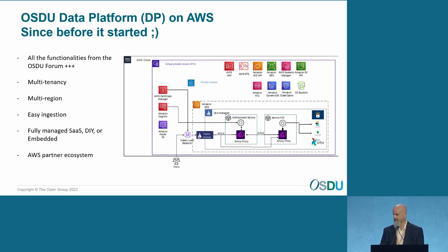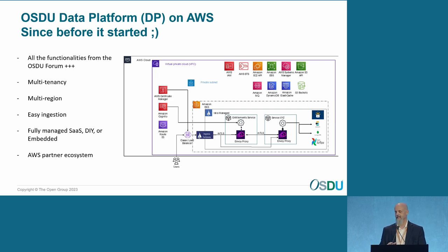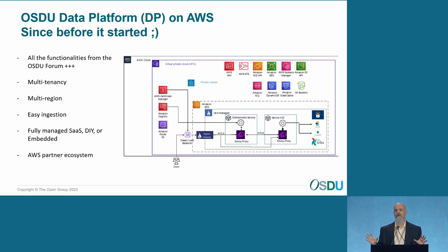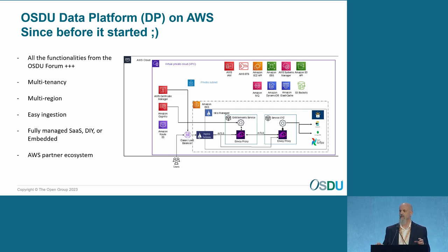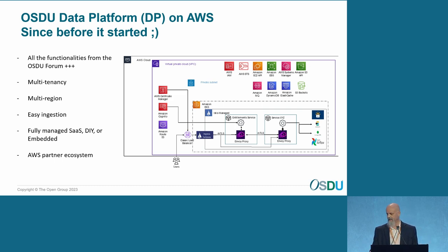So we developed that, leveraging S3 to facilitate it. Another important thing we heard is about multi-region. Shell is working with multi-region, and we are too. By leveraging a feature from S3 called multi-region access point, we can deploy a centralized catalog with distributed storage and replication that you can control and manage anywhere in the world — and I think that's just great.